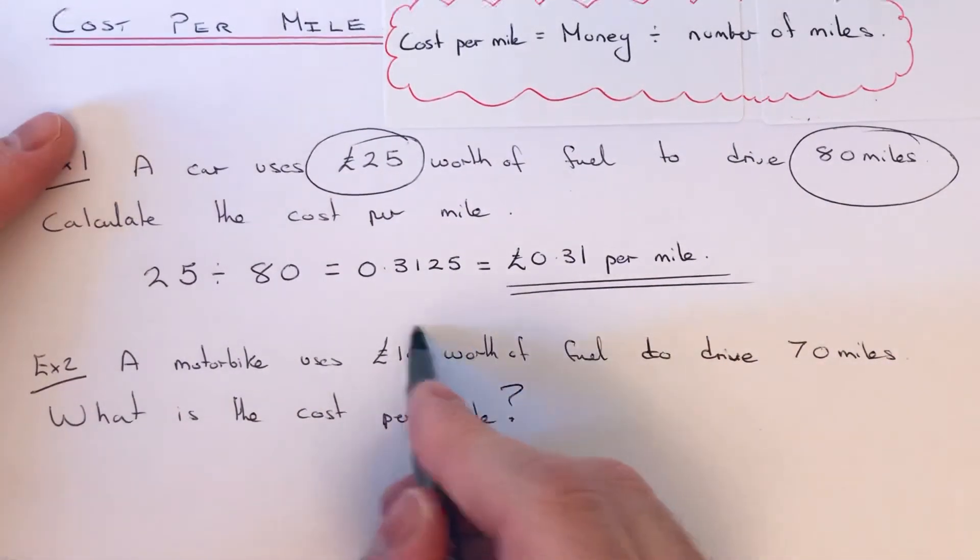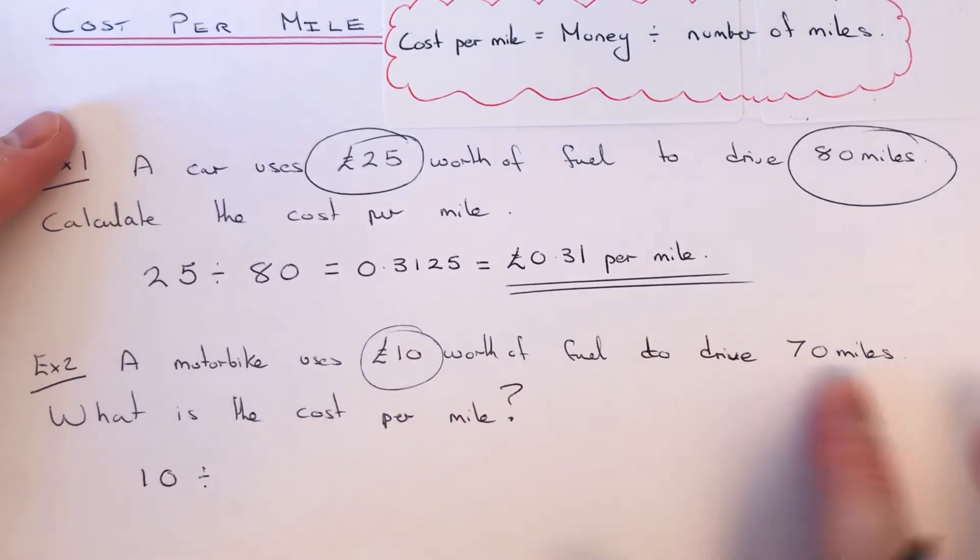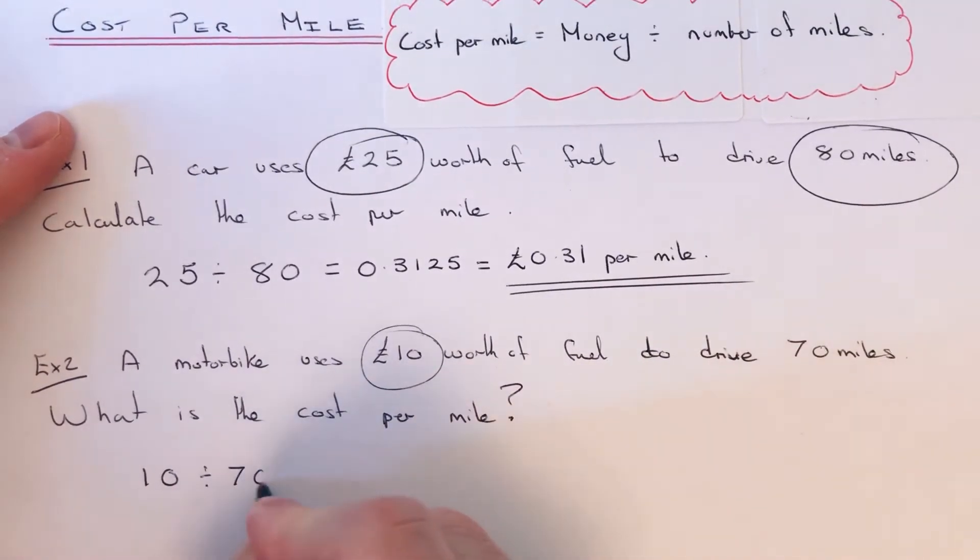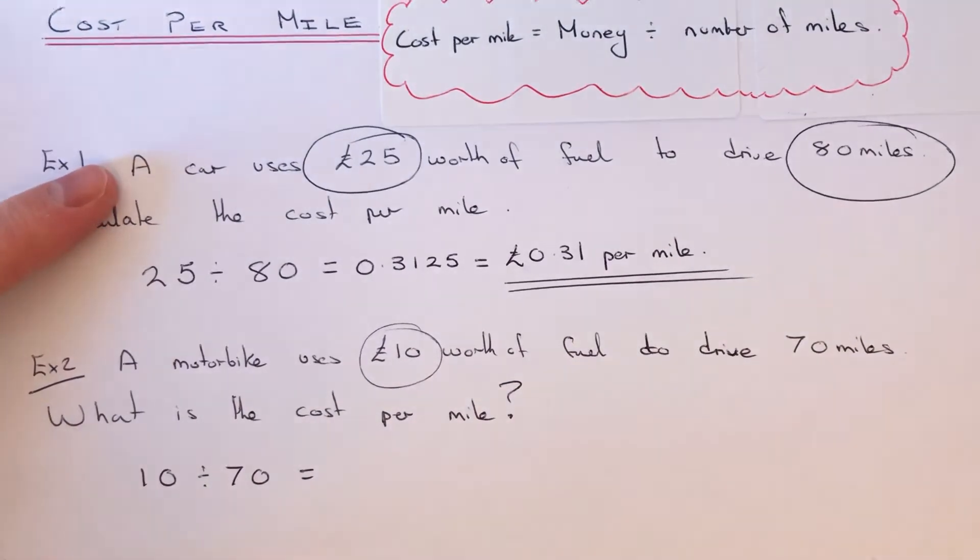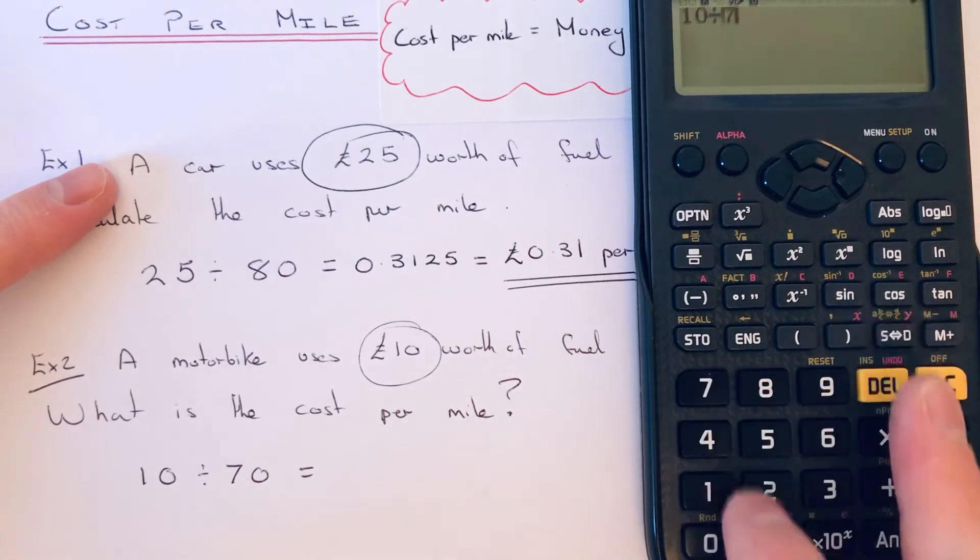Again we get our money which is £10 and we divide that by the amount of miles which is 70. So 10 divided by 70.